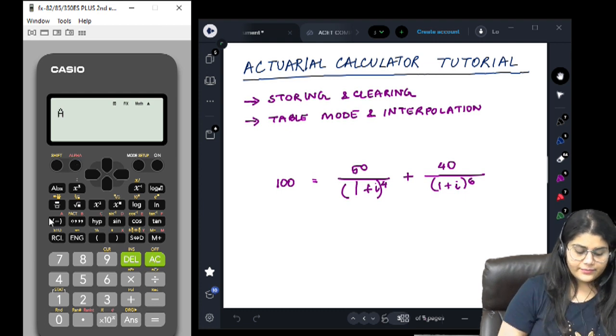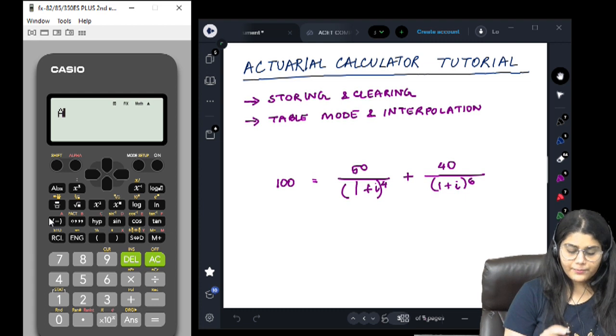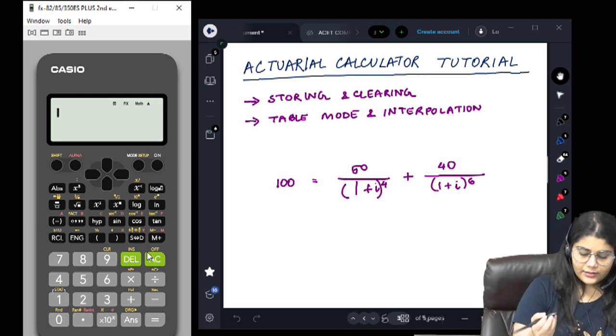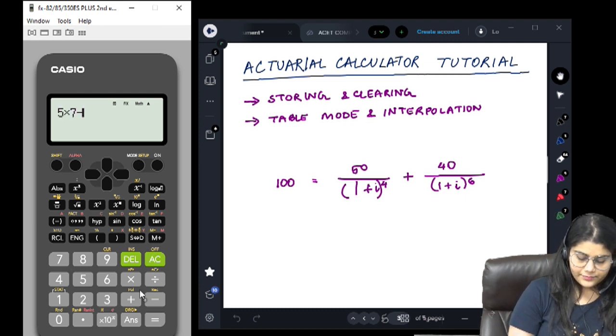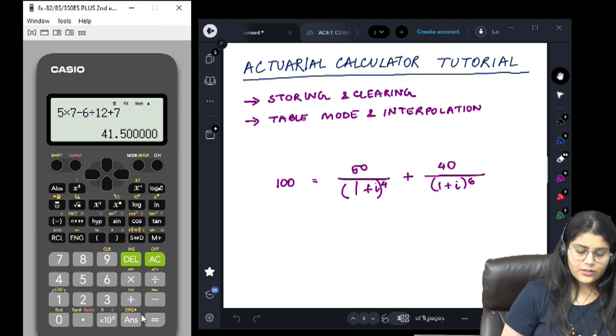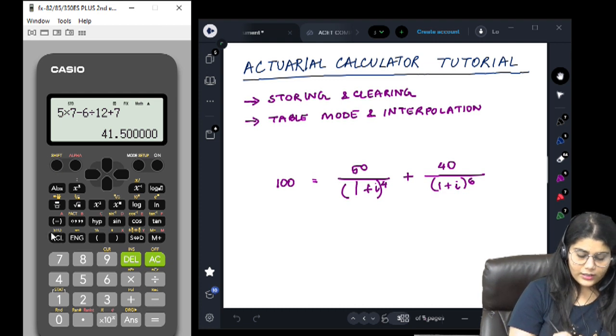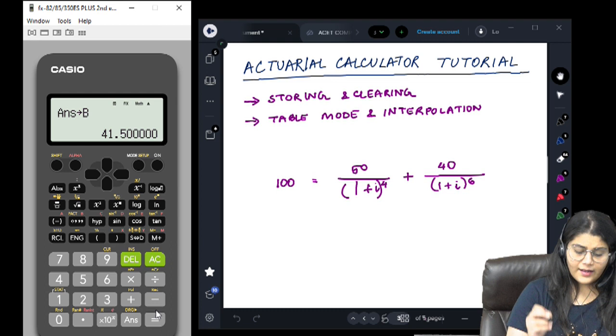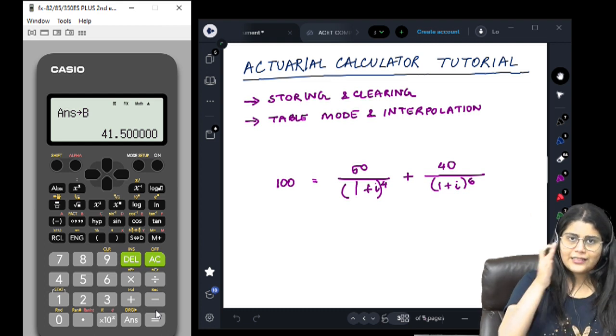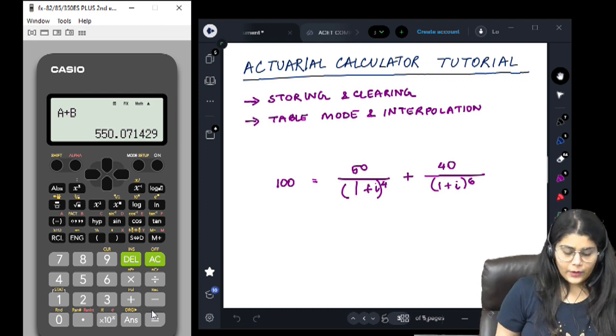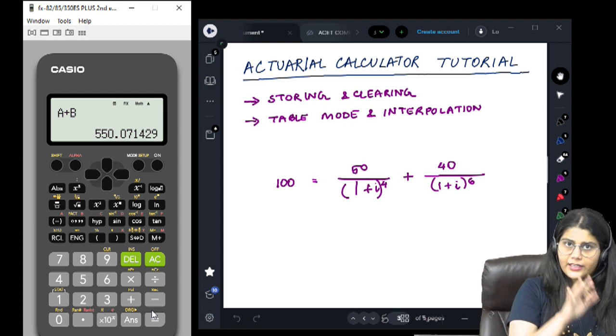I click AC. Now if I press alpha A - because A is written in red, I press this button - I'm getting this output. Now let's say I want another input. I'm calculating 100 times 4. I'm getting this. Now I want to store it again. Shift, store. I'm storing this in B. Now I want to add my first and second answers. Alpha A plus alpha B. Now we are getting 550.